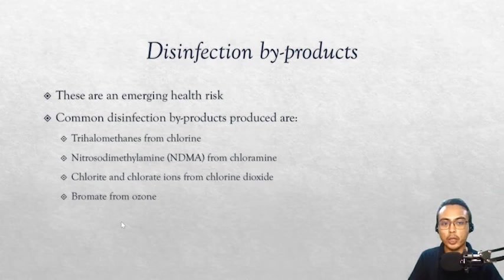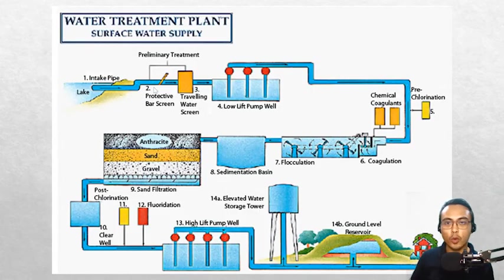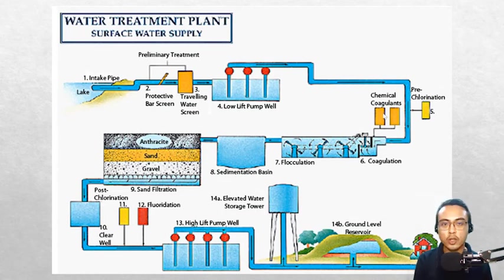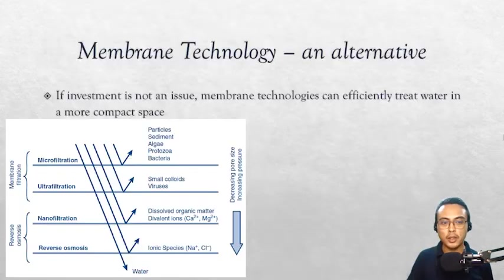In summary, the entire conventional water treatment schematic goes from influent water from a lake, through screens, pre-chlorination, injection of chemical coagulants, flocculation, sedimentation, rapid sand filtration, post-chlorination for disinfection, and finally storage in reservoirs before distribution.